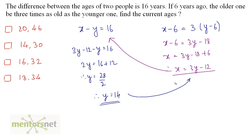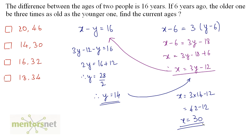Put y here and get the value of x. So, x is equal to 3 times 14 minus 12, which is 42 minus 12, and that is 30. So, x is 30 and y is 14. The current ages are 14 and 30.